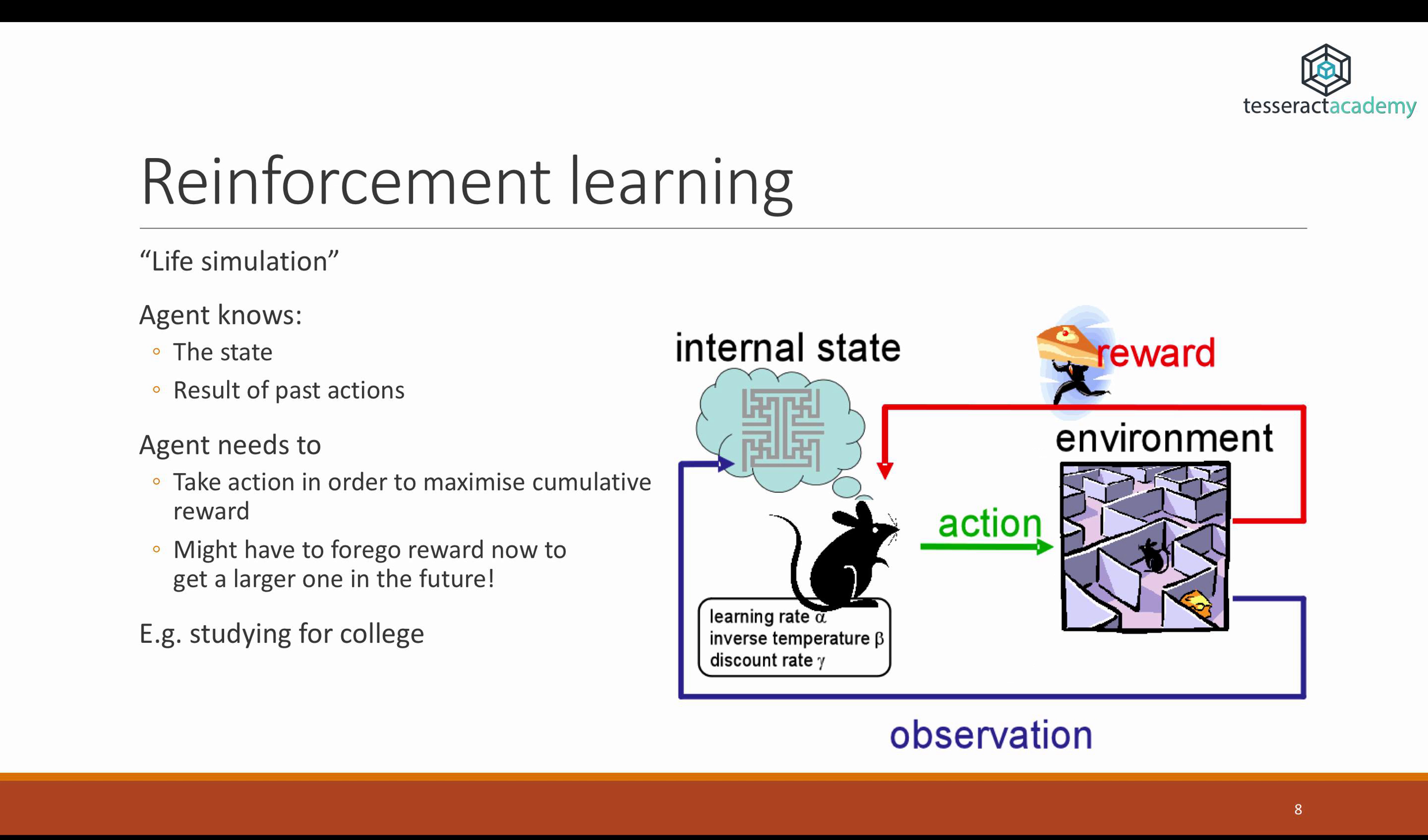Reinforcement learning is a very interesting type of machine learning, which fell out of fashion for around 10 to 15 years, and now it's doing a very dynamic comeback. I like to refer to reinforcement learning as a life simulation. In reinforcement learning, the agent knows two things: the state and the result of past actions.